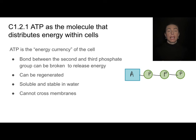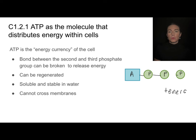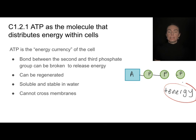If ATP is the energy currency of the cell, I have to be able to get energy out of it somehow. Breaking the bond between the second and third phosphate releases energy. Breaking bonds — those catabolic reactions — release energy, so I can liberate this energy that was in the bond and use it to power some kind of cellular process.